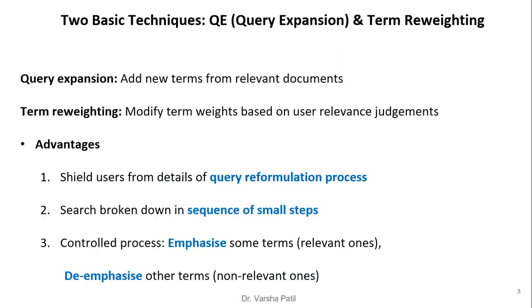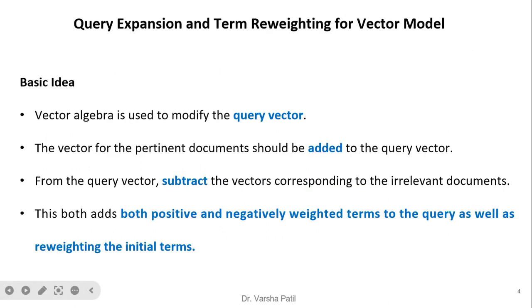Two basic techniques are query expansion — adding new terms from relevant documents — and term reweighting, which modifies term weights based on user relevance judgments. The advantage of this method is that users are not aware of the query reformulation process. The search is broken into a sequence of small steps, emphasizing important terms from relevant documents and de-emphasizing terms from non-relevant documents.